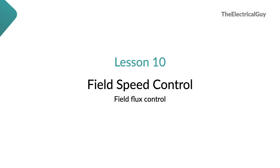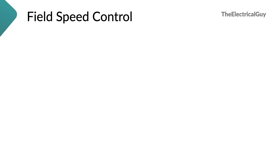Now let's talk about field speed control, also called field flux control. As the name suggests, in this method we control the field flux to control the speed of the DC motor. The speed formula shown on screen is: speed equals ES (supply voltage) multiplied by 60, divided by Z into phi. So ES and flux are the two things you can control in order to control the speed.